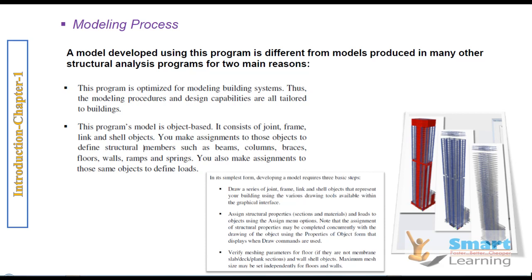Whatever the joints, connections, frames, or different types of objects like shear walls and slabs you use, you assign different member combinations and their properties for beams, columns, walls, ramps, and other stiffness parameters — those are all considered for specific objects typically.